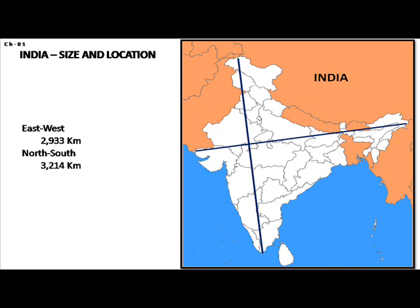The latitudinal and longitudinal extent of India is about 30 degrees. From the westernmost point in Gujarat to the easternmost point in Arunachal Pradesh, the distance is 2,933 kilometers, while from Jammu and Kashmir in the north to Kanyakumari in the south, the total distance is 3,214 kilometers.